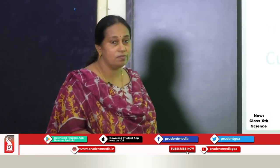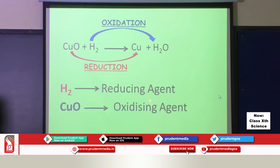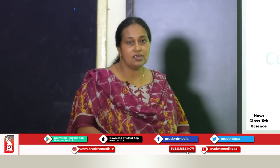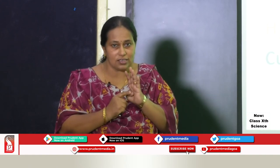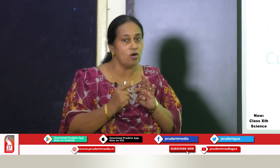Students, remember: the substance which is oxidized will be the reducing agent. If you know which substance is oxidized, that will be the reducing agent. If you know which substance is reduced, that substance will be the oxidizing agent. So here, hydrogen is the reducing agent and copper oxide is the oxidizing agent. The substance which is oxidized will be the reducing agent, and the substance which is reduced will be the oxidizing agent.